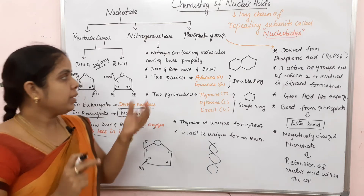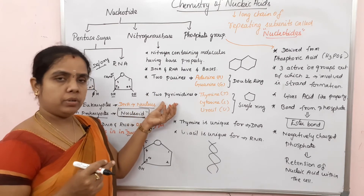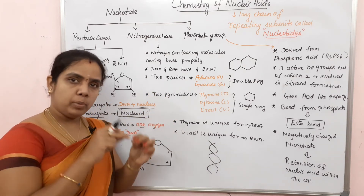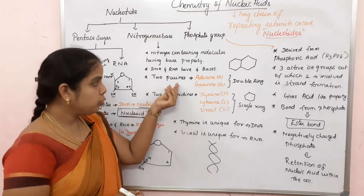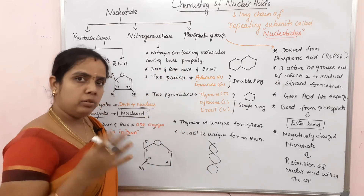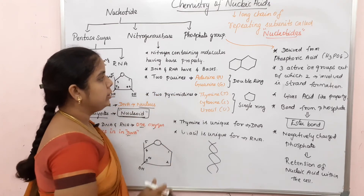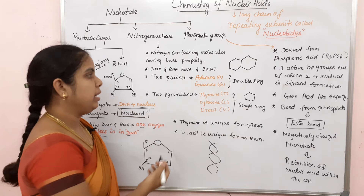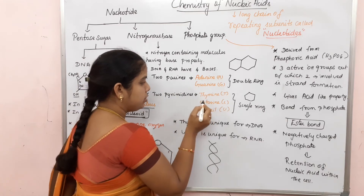DNA or RNA has 4 bases: 2 purines and 2 pyrimidines. These are nitrogen-containing molecules with base properties. The purines are Adenine (A) and Guanine (G). The pyrimidines are Thymine (T), Cytosine (C), and Uracil (U) - making 3 pyrimidine molecules in total.